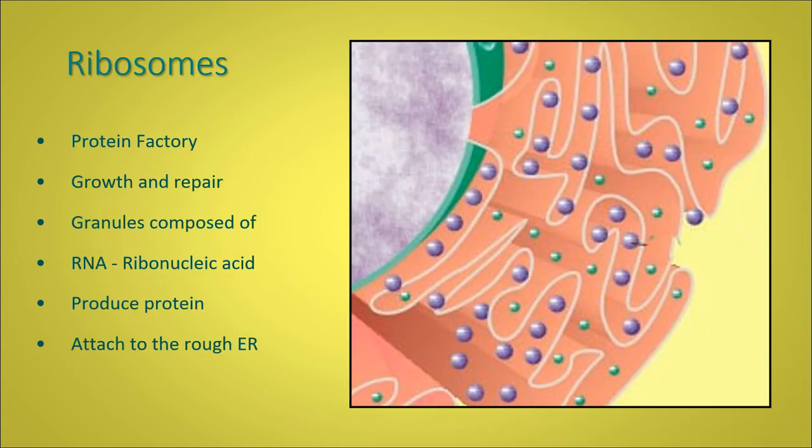The ribosomes are a protein factory. Protein is for growth and repair. Ribosomes are made up of granules of RNA. Repeat after me: ribonucleic acid. Ribonucleic acid, or RNA, is what the ribosomes are made of.